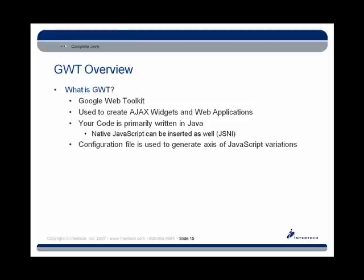GWT, the Google Web Toolkit, is used to create Ajax widgets and web applications. One of the main differences between using GWT and writing an Ajax application on your own is that we will be writing in Java as opposed to JavaScript. Now there is a way to insert native JavaScript into your Java application if you need to — that's known as JSNI, JavaScript Native Interface. That's an advanced topic I'll point you to more information about in a future part of this presentation. But we primarily write our applications in Java.